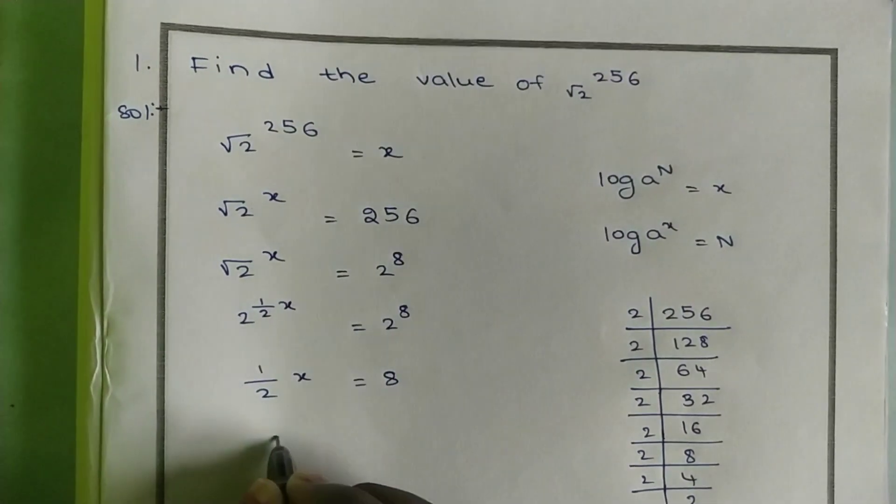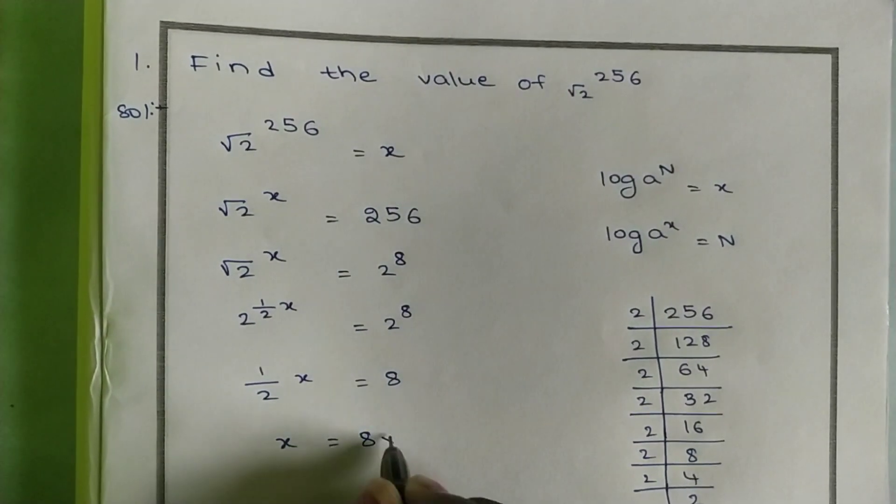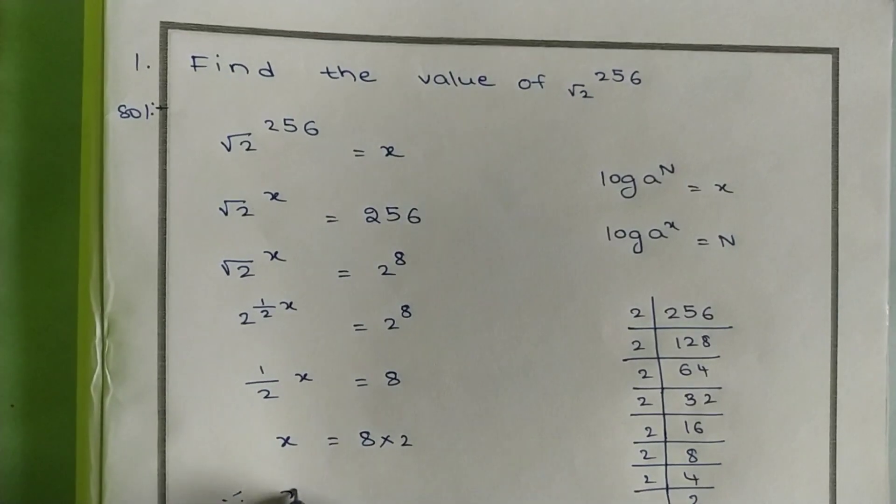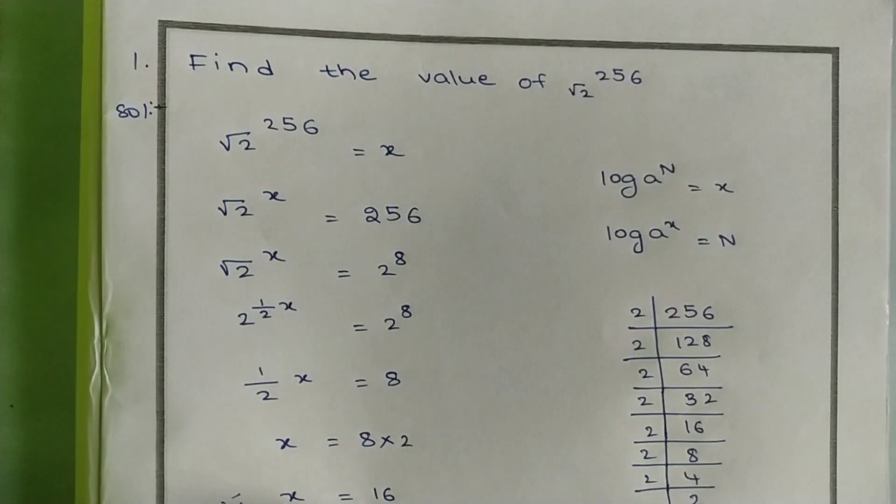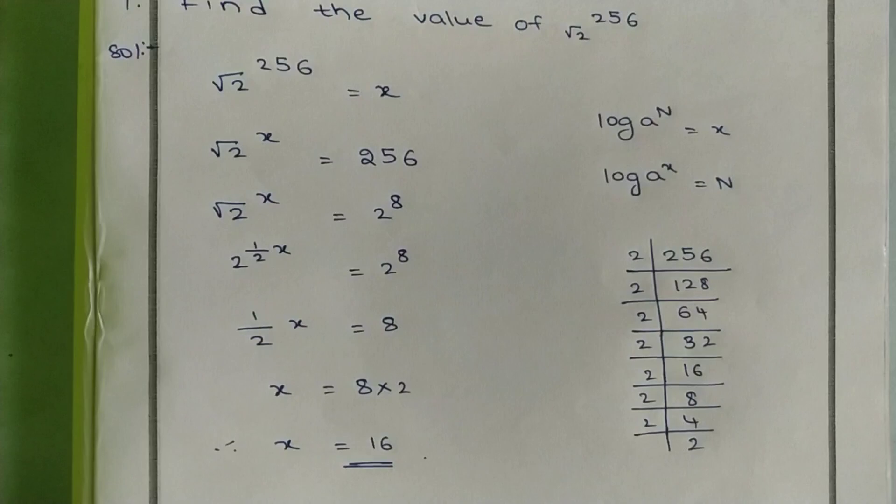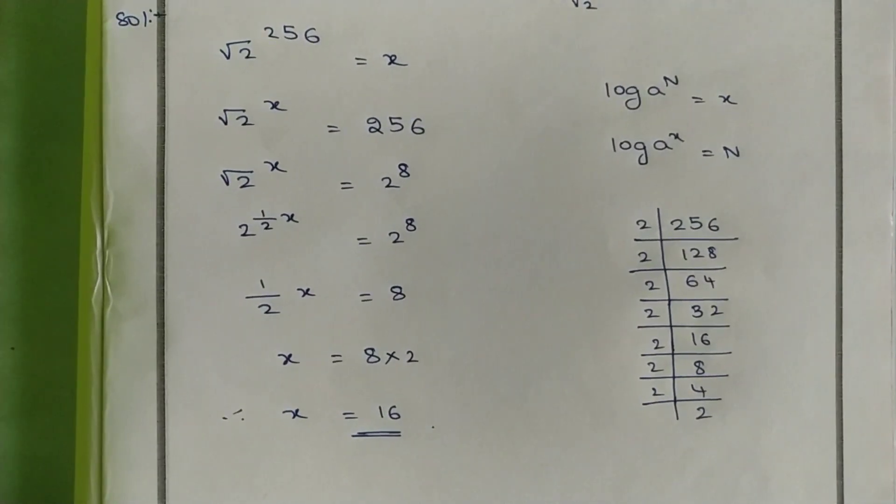Now if we cancel 2 on both sides, half x equals 8. If 2 goes to the right side it becomes multiplication, so x equals 8 times 2, which is 16.